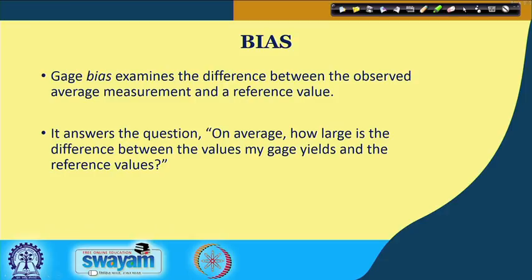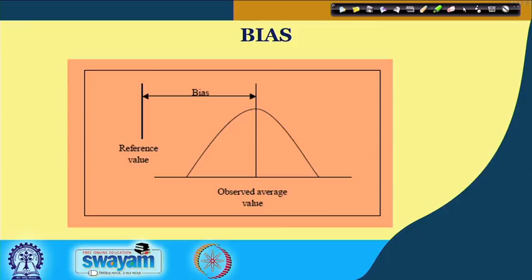Bias is another very important location term. Gauge bias examines the difference between the observed average measurement and a reference value. The reference value is taken by a highly precise instrument in a high-grade laboratory. I want to ask: on average, how large is the difference between the values my gauge yields and the reference values? Higher bias means poorer quality measurement.